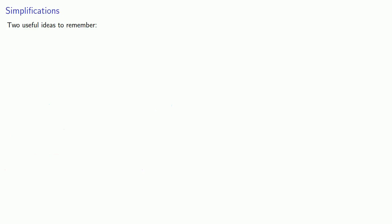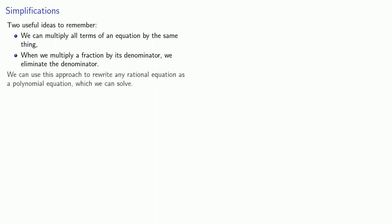So we can simplify rational equations by using two useful ideas. First, we can multiply all terms of an equation by the same thing and still have an equation. And second, when we multiply a fraction by its denominator, we eliminate the denominator. And what this means is that we can use this approach to rewrite any rational equation as a polynomial equation which we can solve.